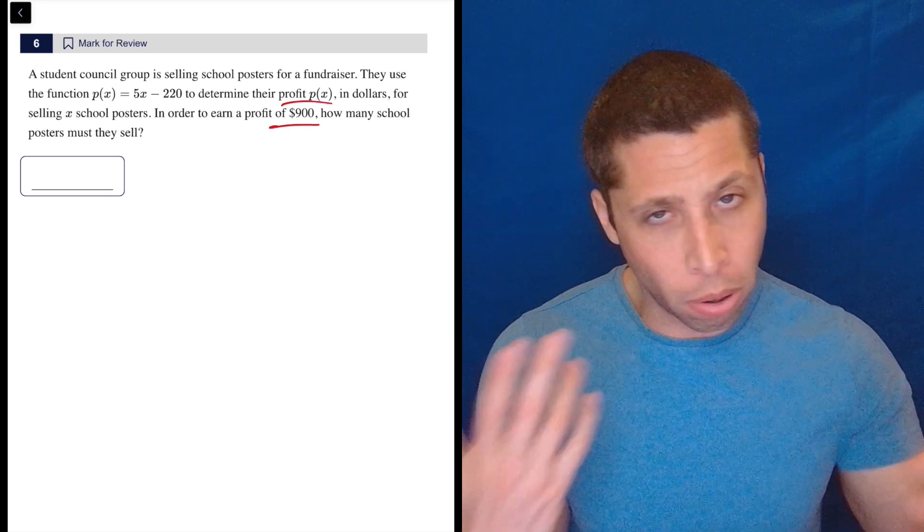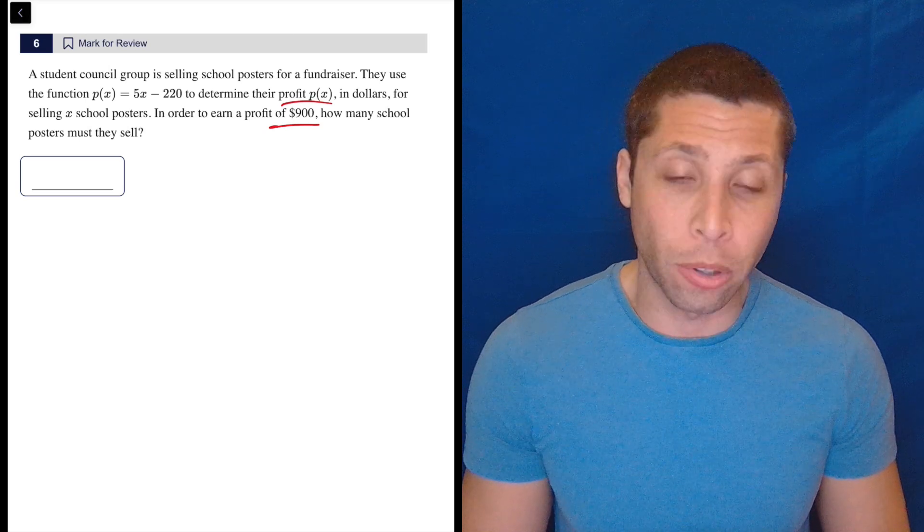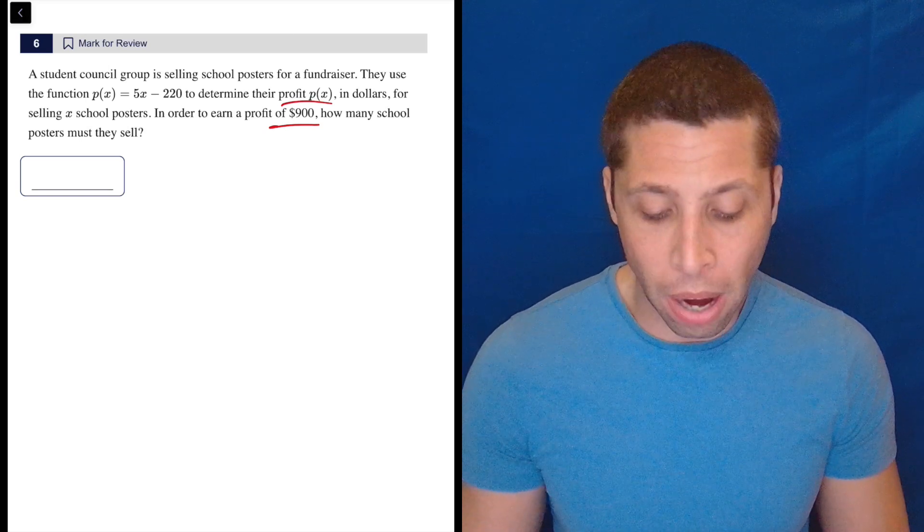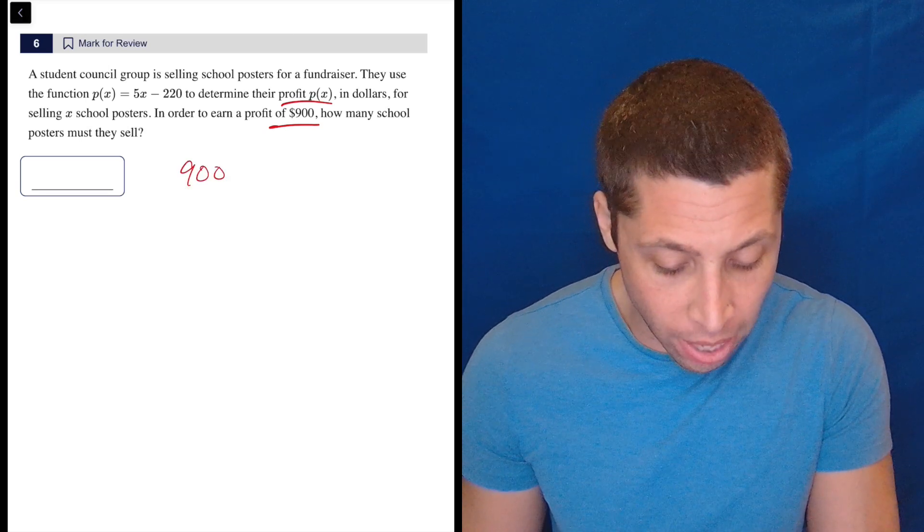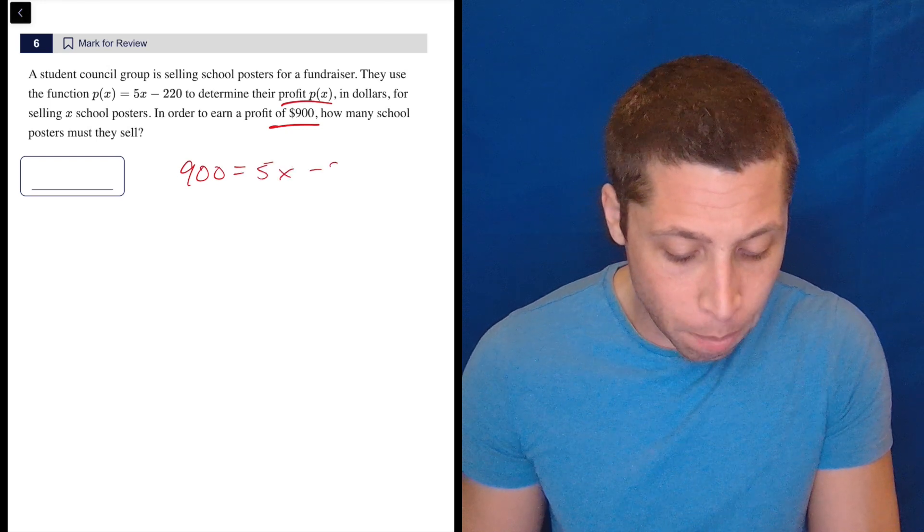This is basic solve for X. There's a story involved, but basically just make sure you understand where to put this. They told us the profit is the P of X part, so really our equation is 900 equals 5X minus 220.